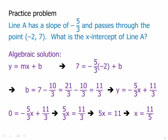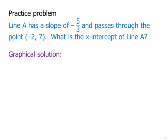I also want to show a completely different way of thinking about this problem — what I would call a graphical solution. We know that the line goes through the point (-2, 7). Let's think about what the slope means. If we want to get closer to the x-intercept, since the slope is negative, we need to move to the right, which means it will move down. So we could move with a run of three and drop the height by five — that corresponds to a slope of negative five-thirds.